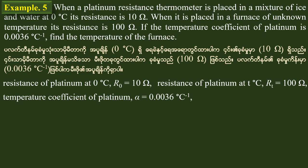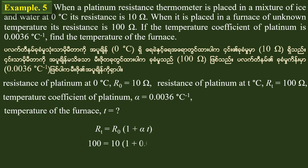Now let's look at the graph of the relation. The temperature of the flame is found using Rt is equal to R0 into 1 plus alpha t. Here, Rt is equal to R0 into 1 plus alpha t.